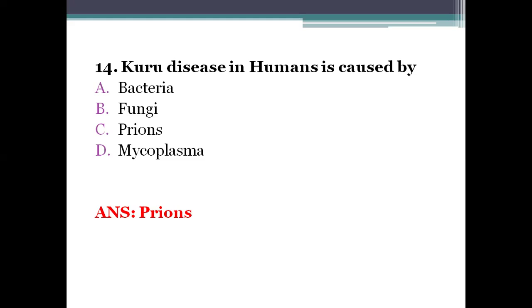Kuru disease is transmitted by the tribal practice of eating infected brains of deceased relatives — a form of non-sterilizing cooking. The symptoms include progressive cerebellar ataxia and tremors. This is mainly caused by cannibalism — consuming individuals of the same species as food — where humans consume human brain, leading to transfer of the Kuru prion.